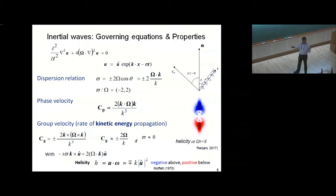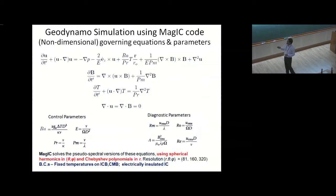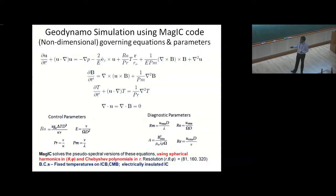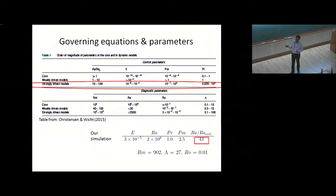Moving to the full dynamo simulations. These are the full non-dimensionalized equations: Stokes, induction equation, temperature, and solenoidal conditions on B and U. The control parameters include Rayleigh number, Ekman number, and Prandtl number. The magnetic Prandtl number is U over the magnetic diffusivity. The code solves the pseudo-spectral version of these equations, with spherical harmonics in theta and phi, and Chebyshev polynomials in r. Fixed temperatures are applied at both boundaries.